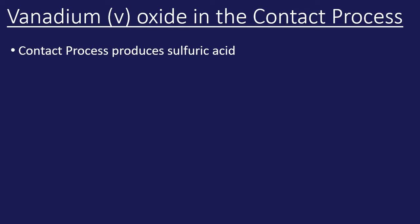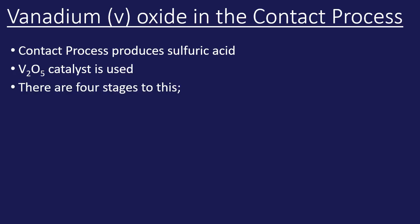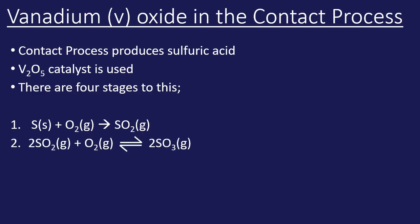The contact process is just a name given to the industrial process that produces sulfuric acid. The catalyst is V₂O₅, vanadium pentoxide. There are four stages to the contact process. You don't need to memorize all of these equations, but these are the four main stages: sulfur is burnt in oxygen to produce sulfur dioxide; the sulfur dioxide then takes part in a reversible reaction with more oxygen to make sulfur trioxide; a small amount of sulfuric acid is then used with the sulfur trioxide to make fuming sulfuric acid.